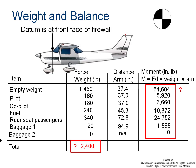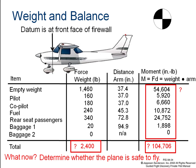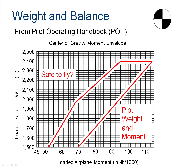We have a total gross weight of 2,400 pounds and a total moment of 104,706 inch-pounds. To apply this, we use charts from the airplane owner's manual to determine if we can fly. The chart has different zones. The top line represents the maximum lift the airplane can generate — the maximum weight including the airplane itself — which is about 2,400 pounds.